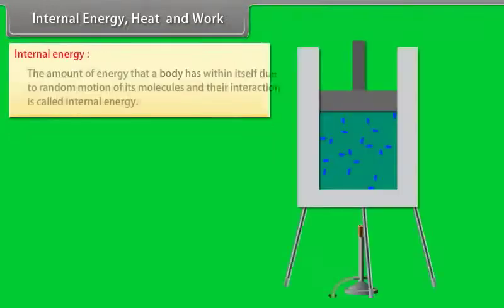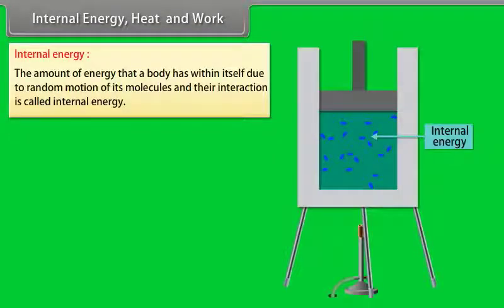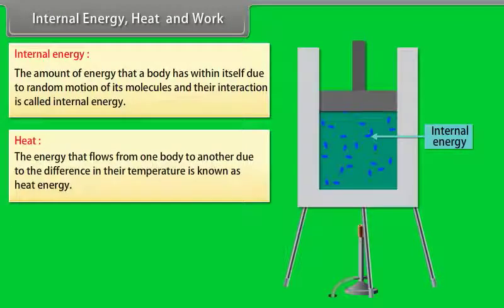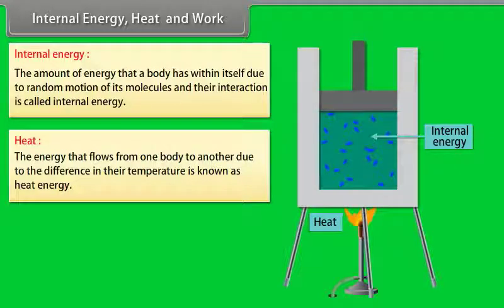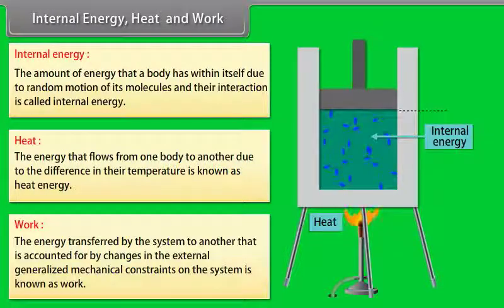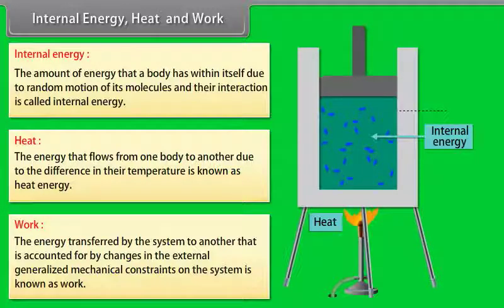Internal energy, heat and work. The amount of energy that a body has within itself due to random motion of its molecules and their interaction is called internal energy. The energy that flows from one body to another due to the difference in their temperature is known as heat energy. The energy transferred by the system to another, accounted for by changes in the external generalized mechanical constraints on the system, is known as work.